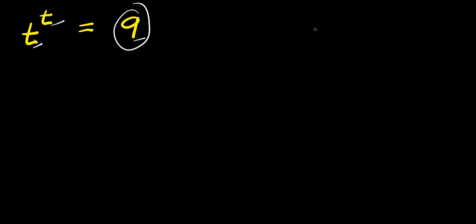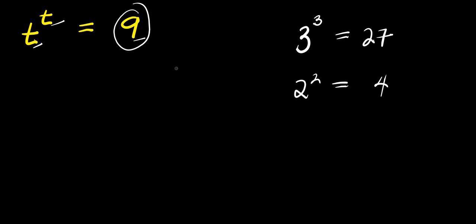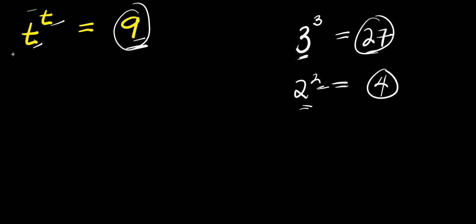Some of you will think it is 3, but don't forget that 3 raised to the power of 3 is not 9 — this is 27. If you consider 2, you have 2 to the power of 2, which is 4. So what we are looking for is 9: 3^3 gives us 27, and 2^2 gives us 4. This tells us the value of t is between 2 and 3.